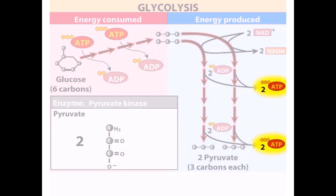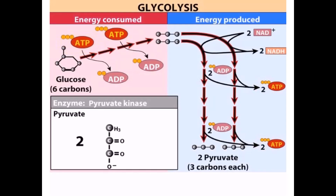By pyruvate kinase, the phosphoenol pyruvate is converted to pyruvate. In total, 4 ATP are synthesized from each starting molecule of glucose. Since 2 ATPs were required to prime the initial reactions, the net gain from glycolysis is 2 ATP molecules.